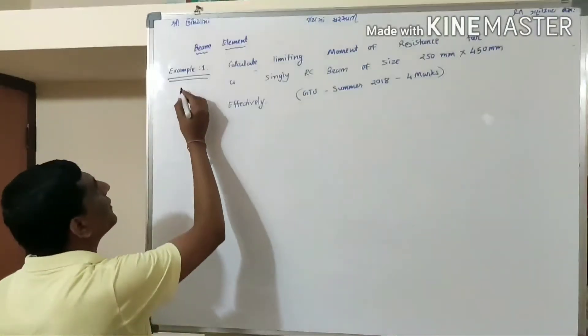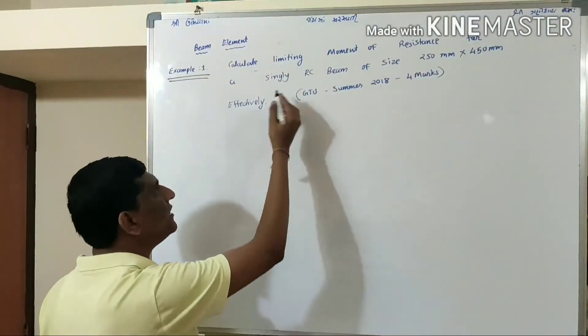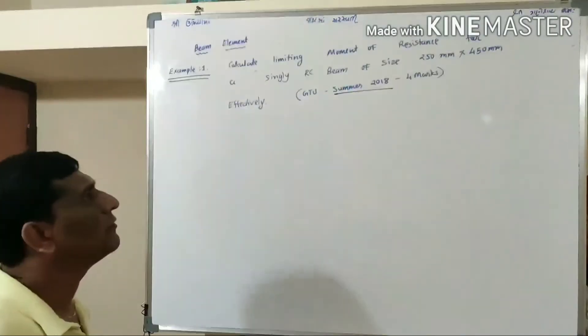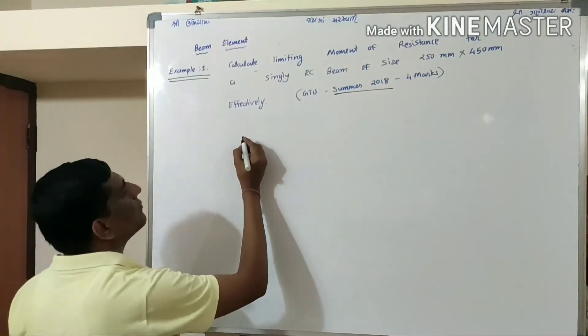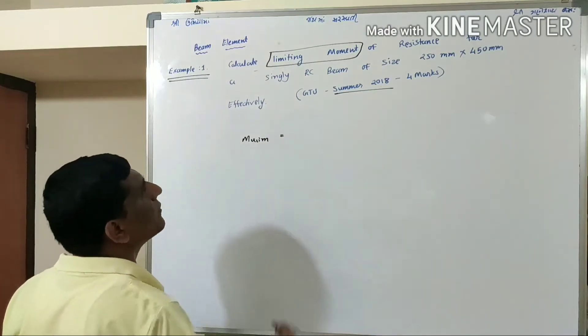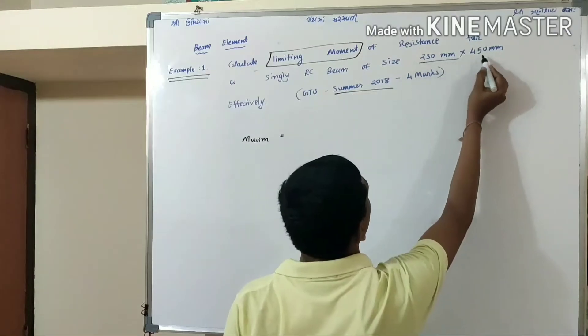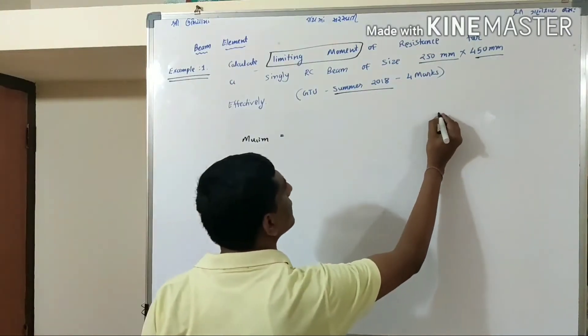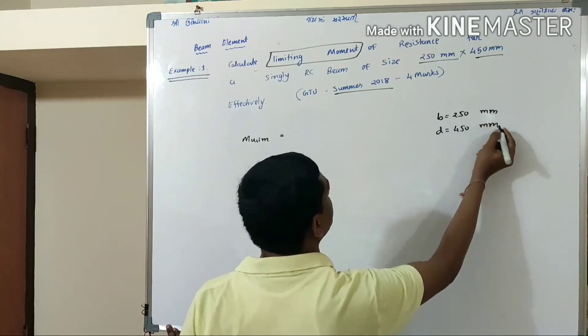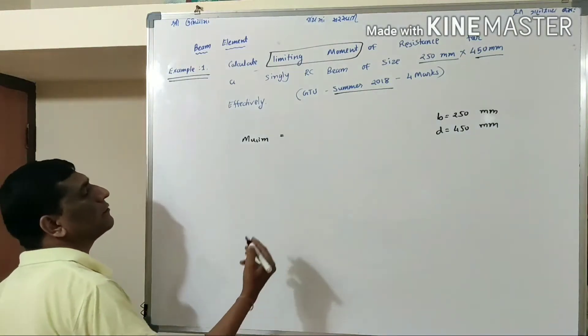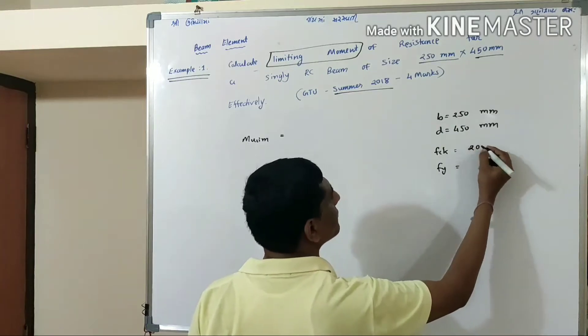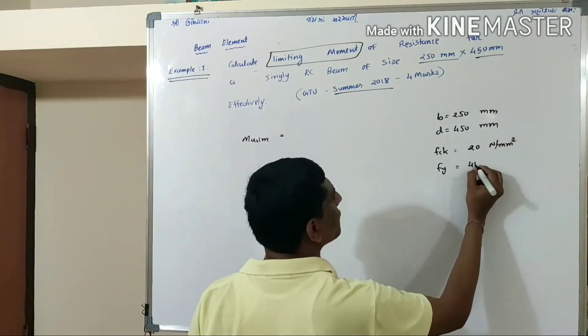I am calculating examples of singly reinforced beam. It is asked in G2 summer 2018 for four marks. We have to calculate the limiting moment, that is mu limiting.